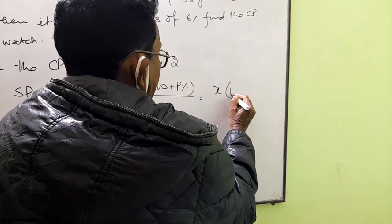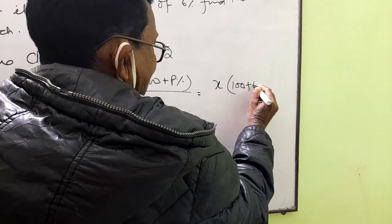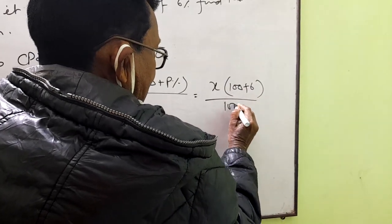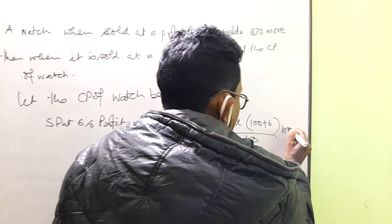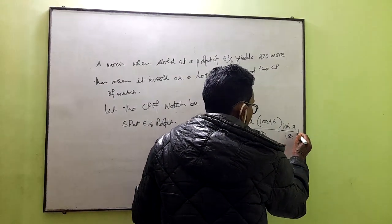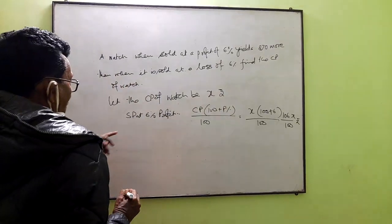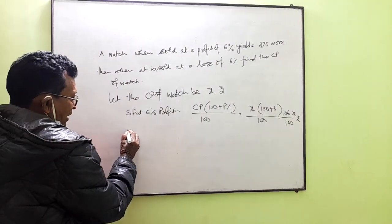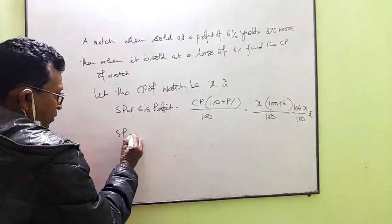So it is 106x by 100. Now SP at 6% loss.